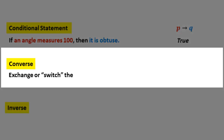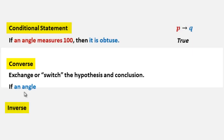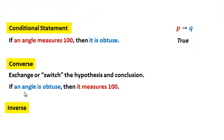Let's take a look at a new word: converse. It means to exchange or switch the hypothesis and conclusion. Writing that out: if an angle is obtuse, then it measures 100°. You can tell by the colors that we have switched the hypothesis and the conclusion. With symbolic notation we do the exact same thing — we switch it — so now we have: if Q then P.